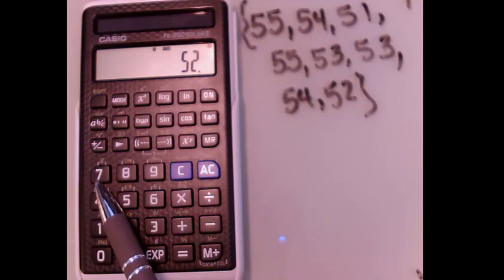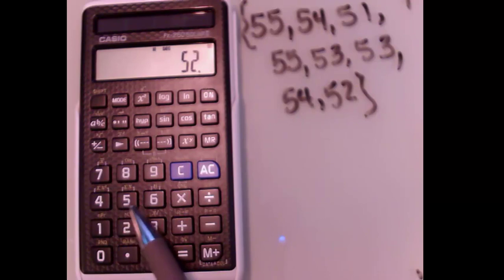So where are those? If you look above the 7, the 8, the 9, the 4, the 5, and the 6, you'll see different statistical calculations. So let's just start with an easy one.